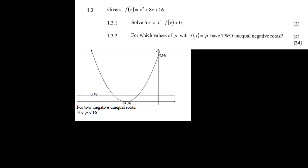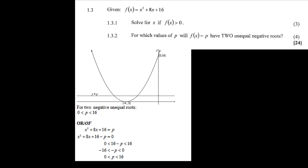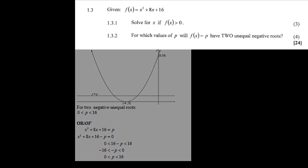Question 1.3.2: for which values of p will f(x) equals p have two unequal negative roots? Starting with the graph: if p is less than or equal to 0, f(x) is greater than 0 so all roots require p greater than 0. Since f(0) equals 16, the y-intercept is 16, and we can lower the horizontal line until p equals 16. Therefore we have unequal roots when 0 less than p less than 16. Algebraically: x squared plus 8x plus 16 minus p equals 0, so 0 less than 16 minus p less than 16, giving 0 less than p less than 16.